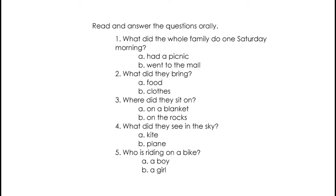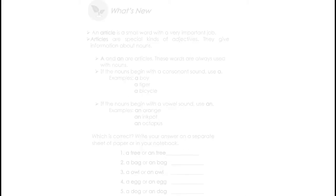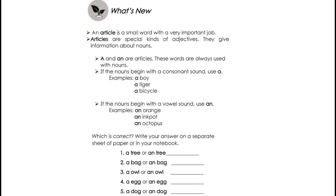You did a great job. So let's proceed. What's New? An article is a small word with a very important job. Articles are special kinds of adjectives. They give information about nouns. A and An are articles. These words are always used with nouns.